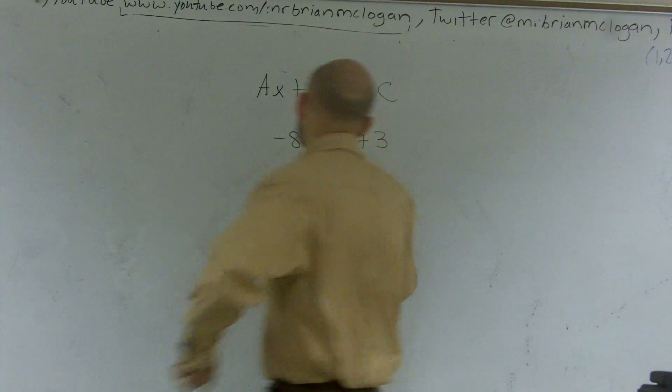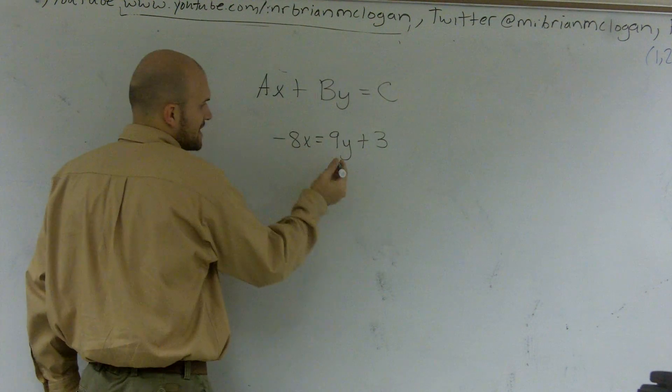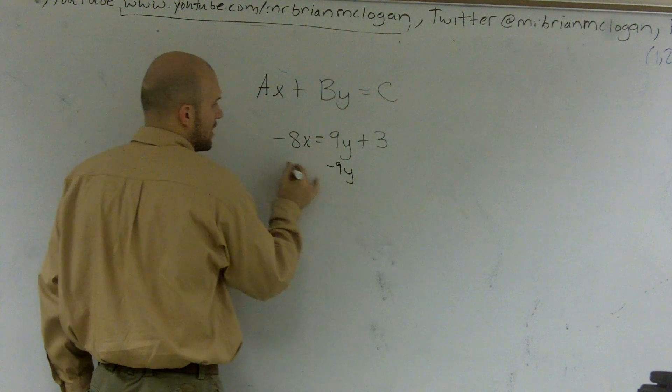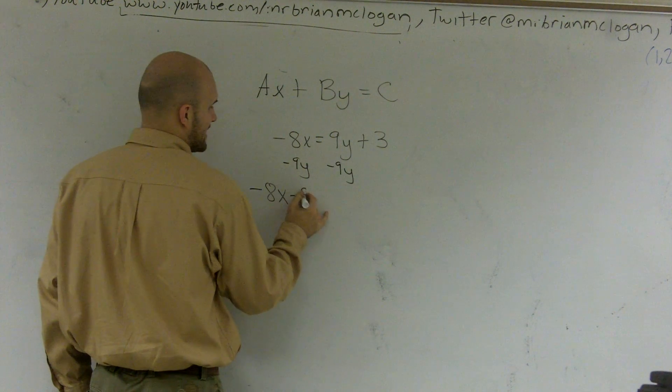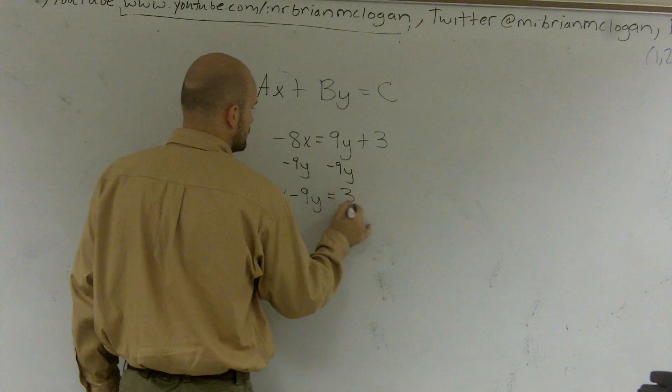So the first thing we do is I'm going to write it out. To get my y to the same side as the x, I need to subtract 9y. So if I have an 8x, negative 8x minus 9y equals 3.